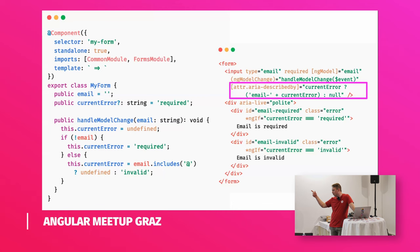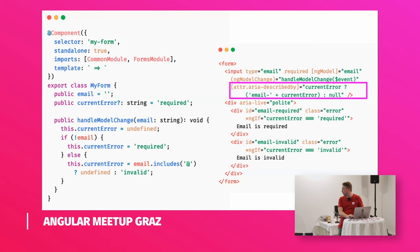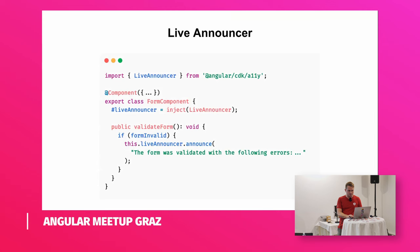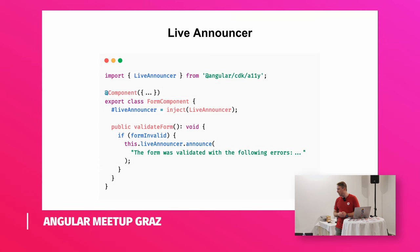In the simplified example here with email form validation, we dynamically add the ARIA described-by attribute when there is an error. In the ternary operator, if there is not an error, we set the value to null — and null means the attribute will be completely removed from the DOM, so the screen reader or assistive technology will not see this attribute anymore. We also use the ARIA live polite attribute here. If you want more control beyond HTML markup to announce updates to the screen reader, you can use the Live Announcer provided by the Angular CDK.